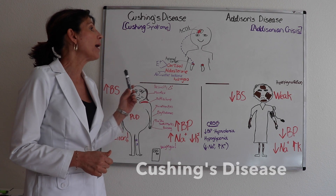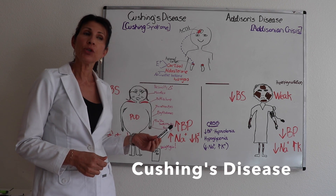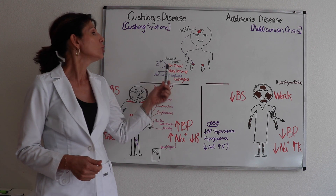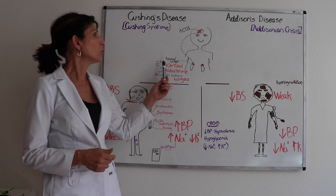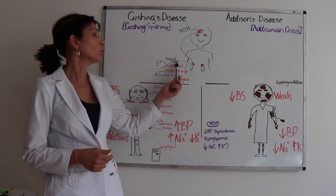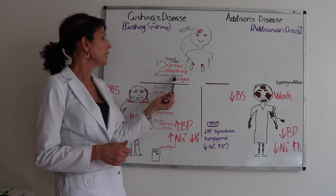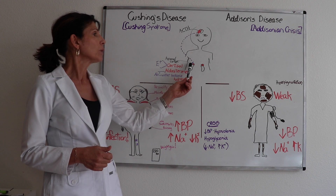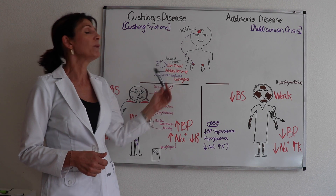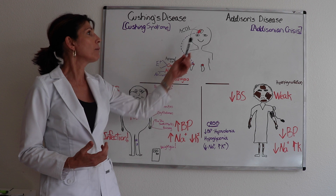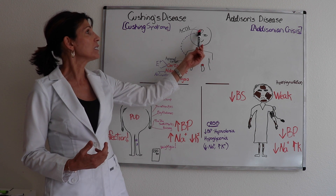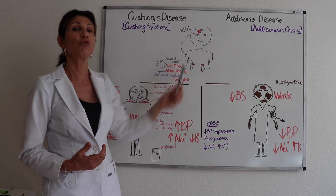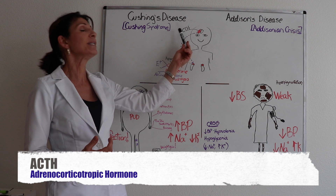This lesson is about the hypersecretion or insufficiency of hormones released from the adrenal cortex. The adrenal cortex releases cortisol, the glucocorticoid, aldosterone, the mineralocorticoid, and the androgens. These hormones don't release on their own accord because they're part of the endocrine system — it's based on feedback. The adrenal cortex receives a signal from the anterior pituitary through adrenocorticotrophic hormone, or ACTH.